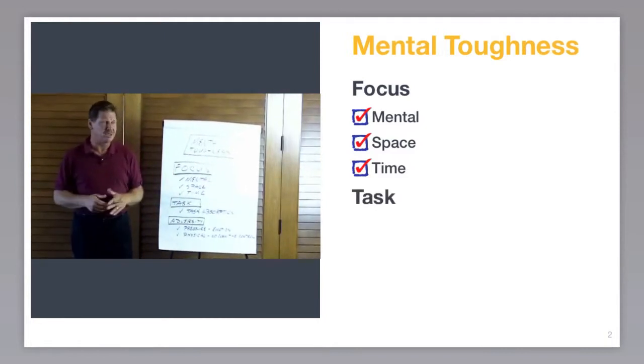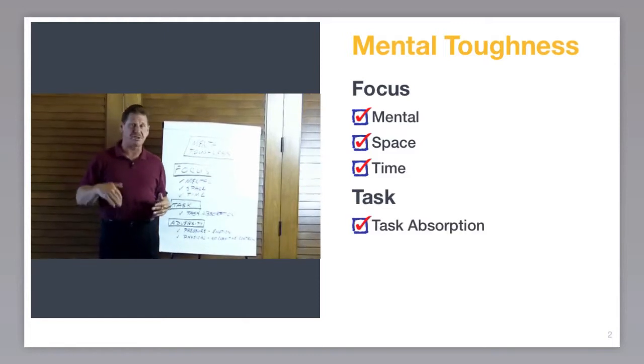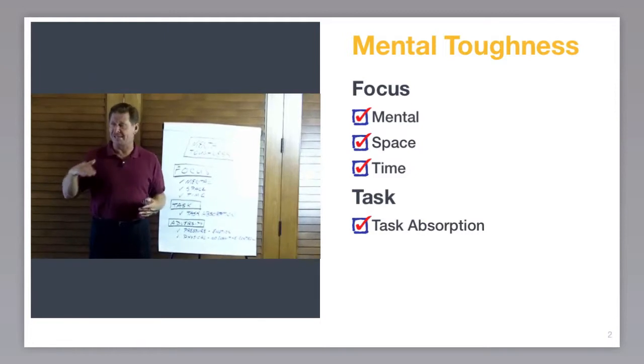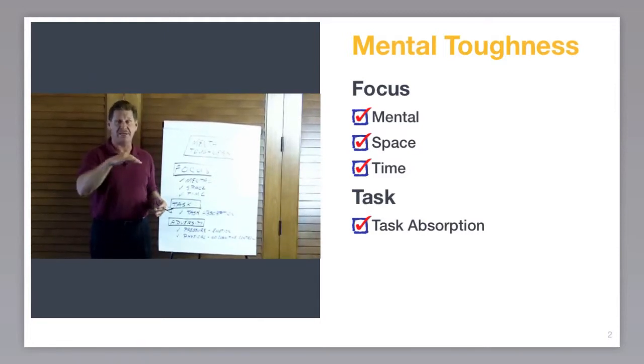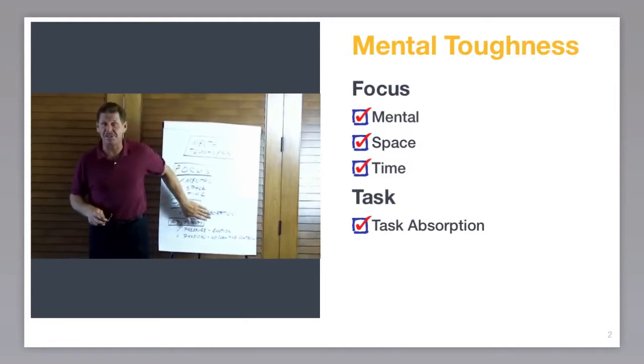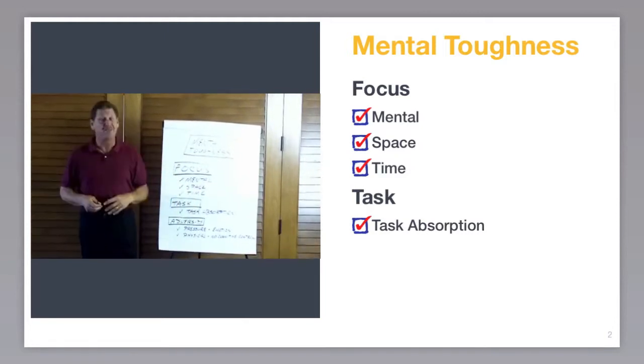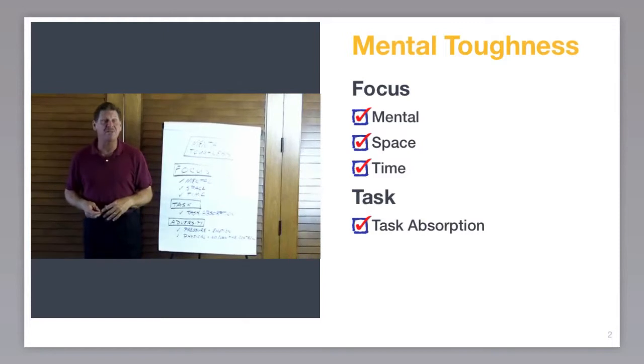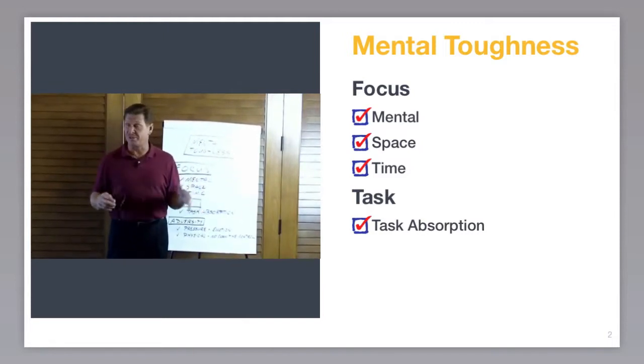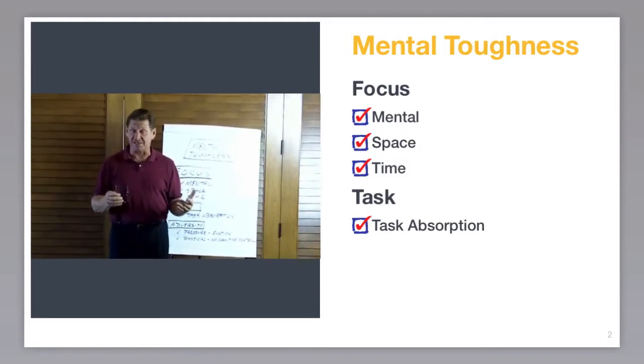That gets me to my next one, which is task absorption. This is one of the three key mental skills. This is what we call a zone precursor. If you have total task absorption, you are in a state where you can get into the zone. When you are in the zone, this is one of the things you have - total task absorption. That's where we want to be. We want to be totally task absorbed. It's a zone state.